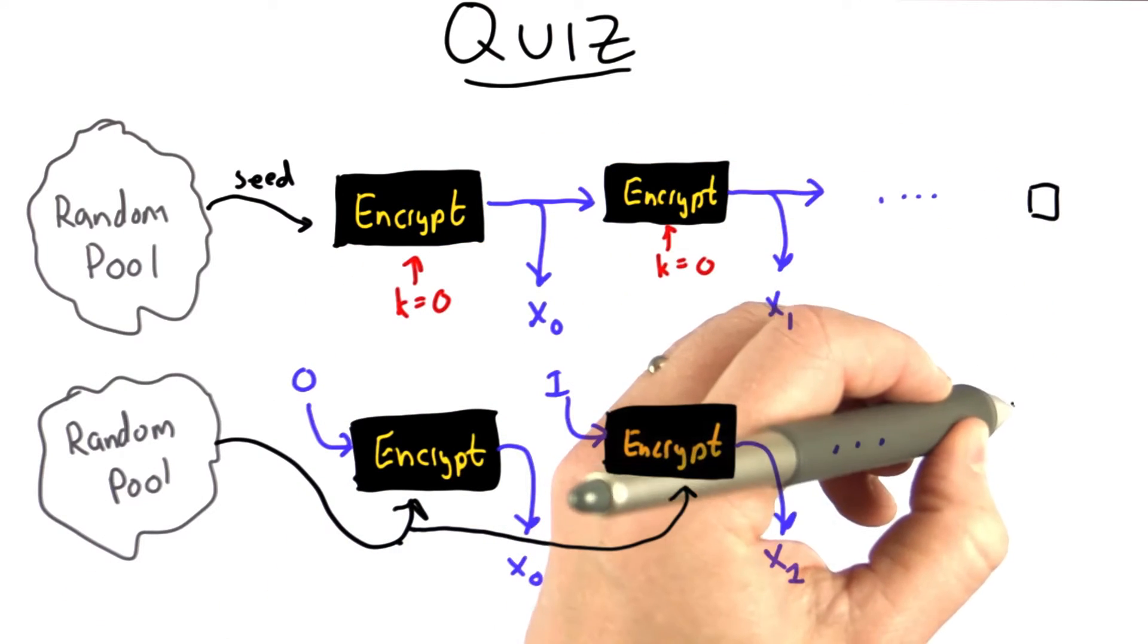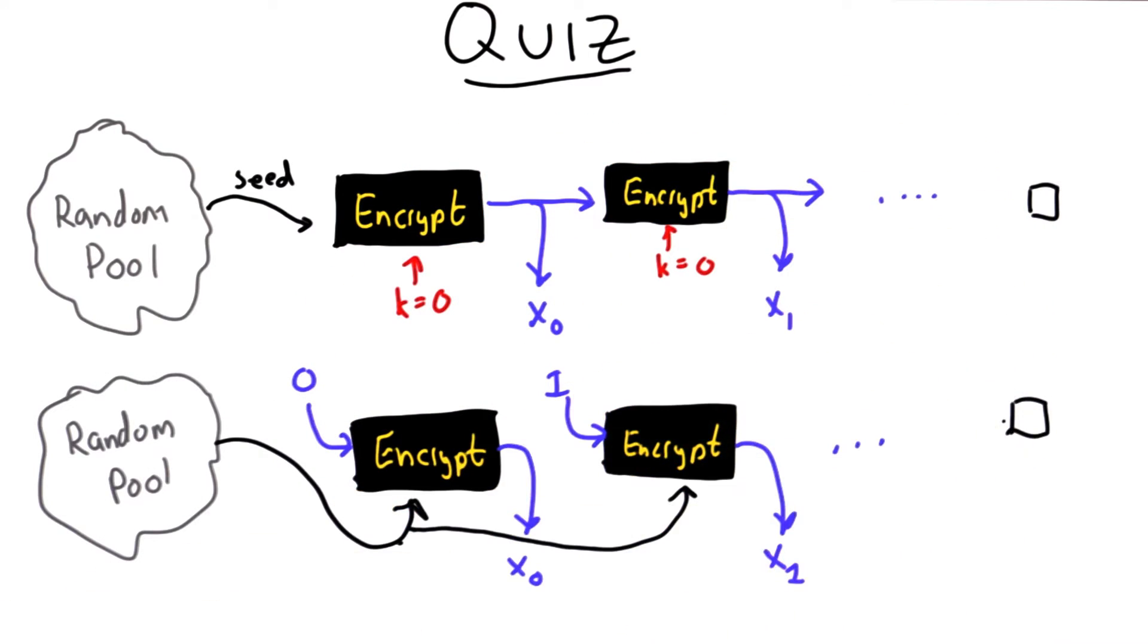The second option, we're going to extract a seed from our random pool. We'll use that as the key to encrypt, and for the first random output, we'll get the result of encrypting 0 with that key.